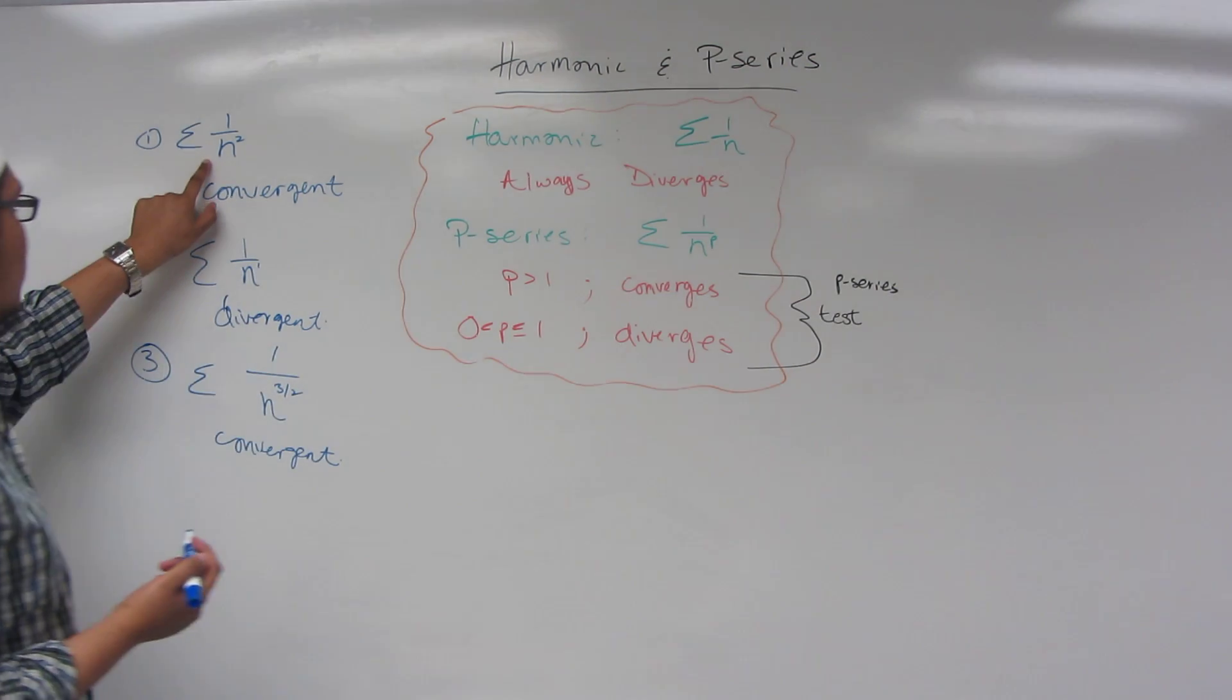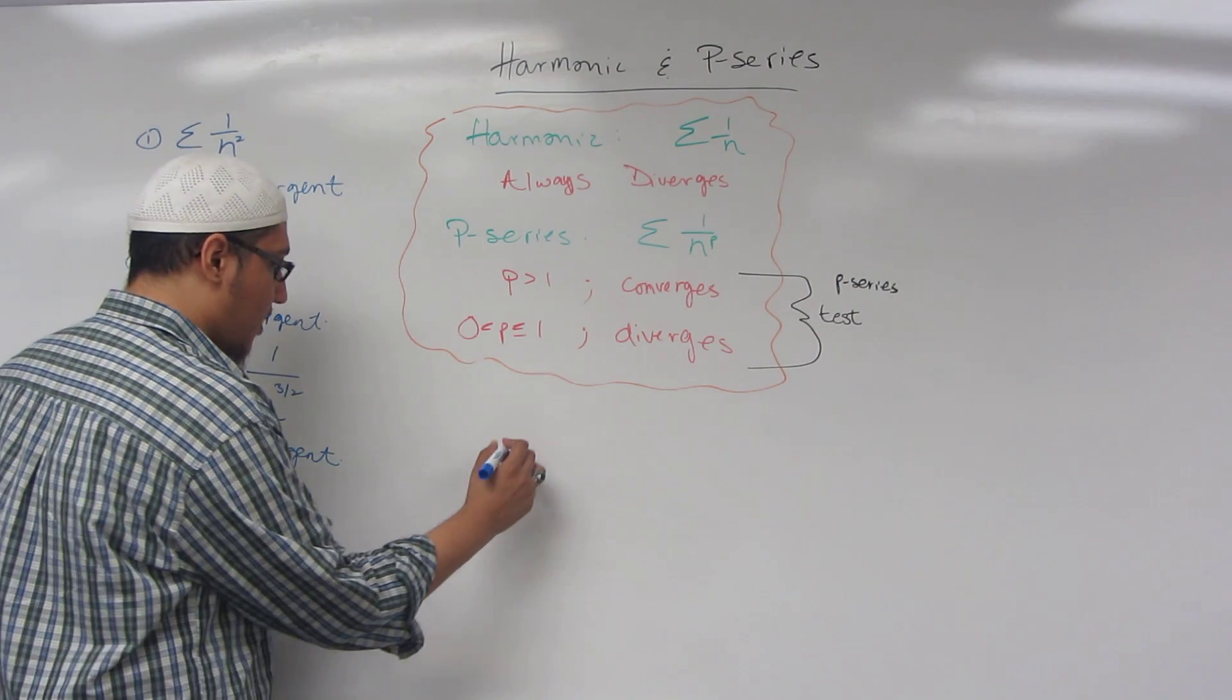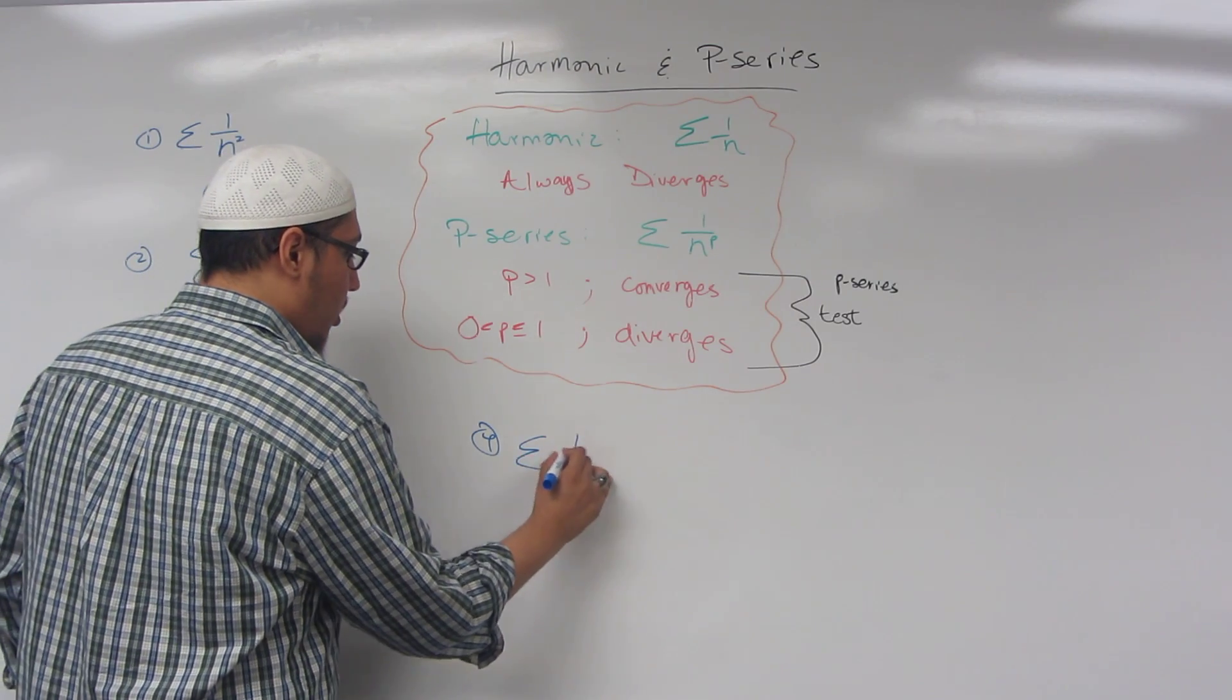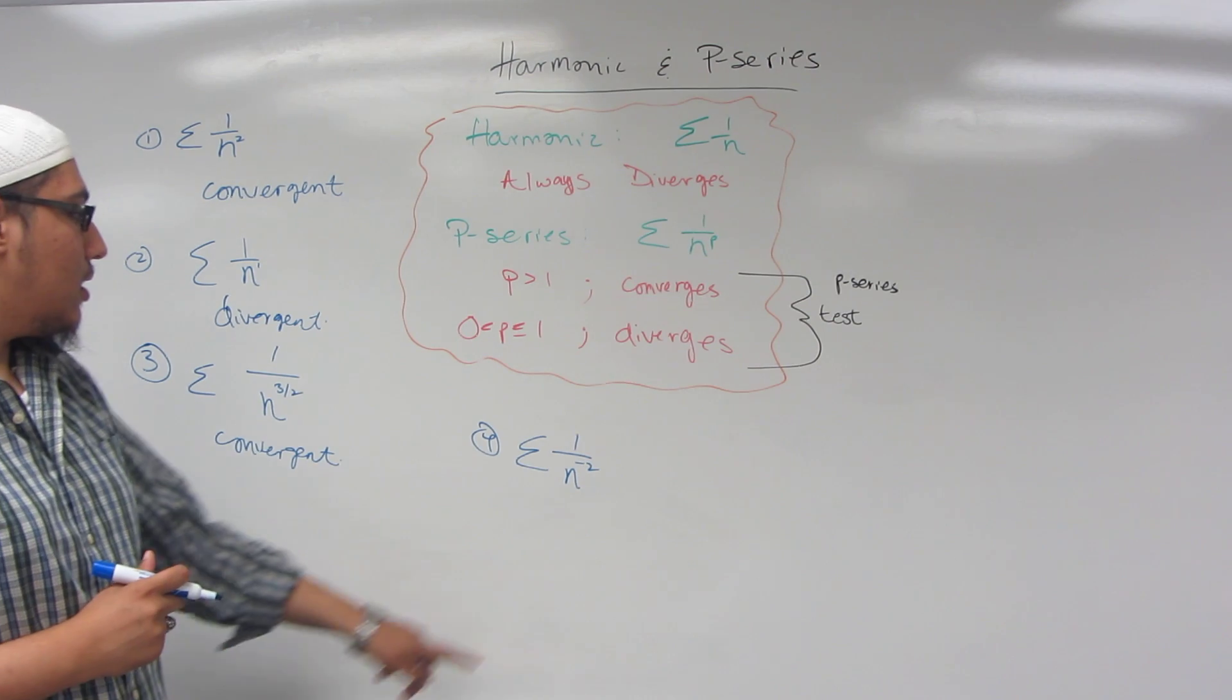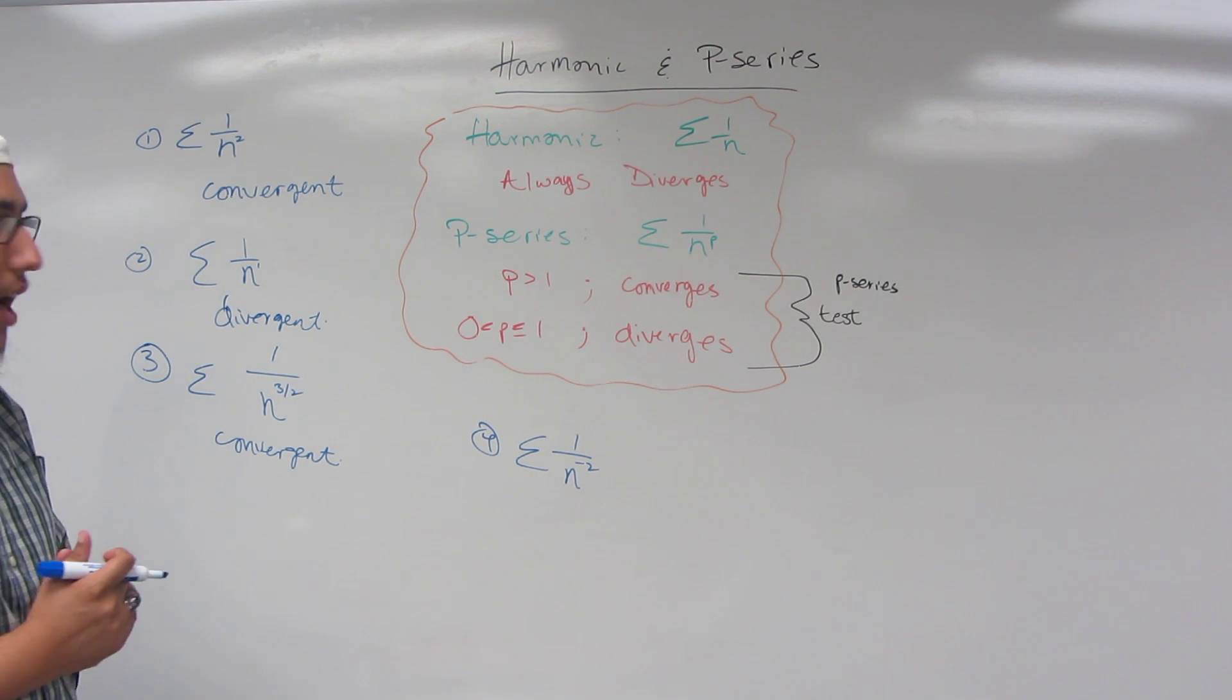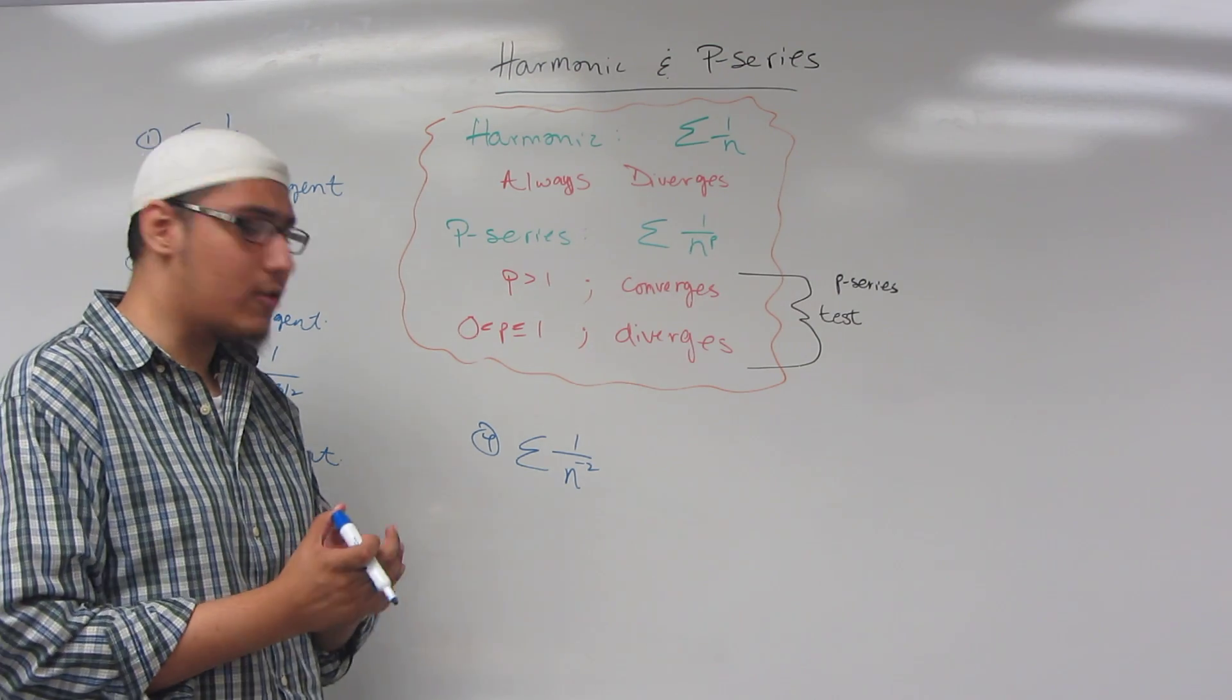So for example, we used 1 over n squared, right? So I'll make this new one, number 4, sigma 1 over n to the minus 2. Now, p is not between 0 and 1 and p is not greater than 1 because it's negative 2. So how can we work with this series? Well, let's rewrite. The key to series is rewriting, rewriting, rewriting.